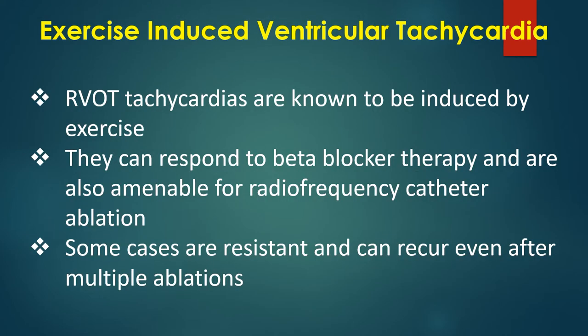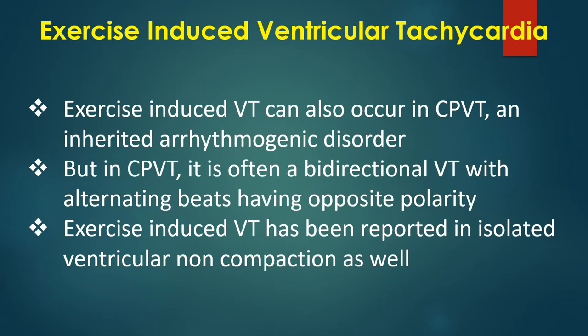RVOT tachycardias are known to be induced by exercise. They can respond to beta blocker therapy and are also amenable to radiofrequency catheter ablation, though some cases are resistant and can recur even after multiple ablations. Exercise-induced ventricular tachycardia can also occur in catecholaminergic polymorphic ventricular tachycardia and other inherited arrhythmogenic disorders. In CPVT, it is often a bidirectional ventricular tachycardia with alternating beats having opposite polarity. Exercise-induced VT has also been reported in isolated left ventricular non-compaction.